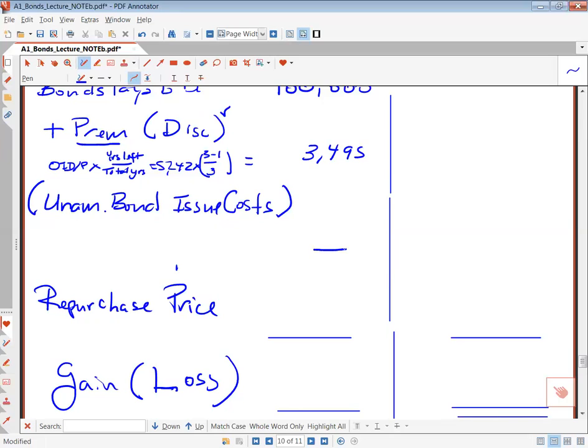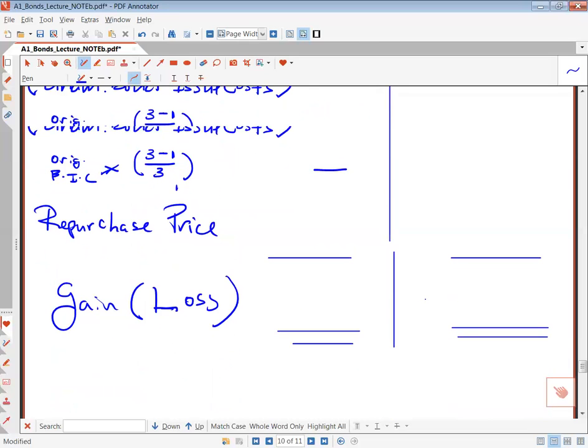In this case, we have no unamortized bond issue costs, but it would be the original bond issue cost and then multiplied by the same thing. The total number of years minus how many years have been amortized to date divided by the total number of years. But in this case, it's zero, so we don't need to calculate that.